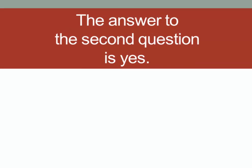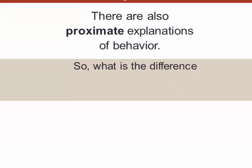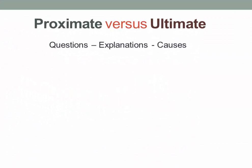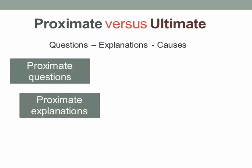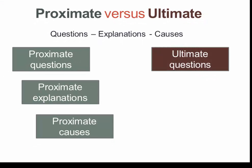The answer to that second question is a definite yes — there are other kinds of explanations, and these are often labeled proximate explanations. So what is the difference between an ultimate explanation and a proximate explanation? One point to make at the start is that I tend to move interchangeably between the terms question, explanation, and cause, and there's not too much significance to that in understanding the contrast between proximate and ultimate.